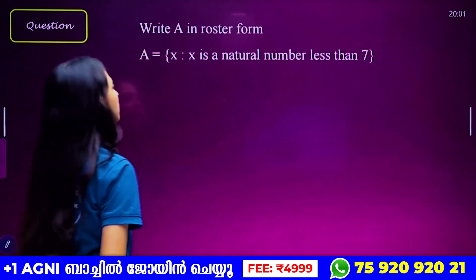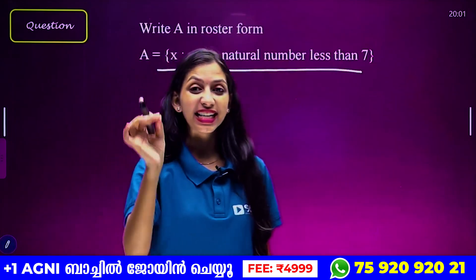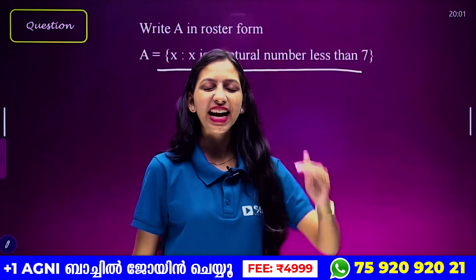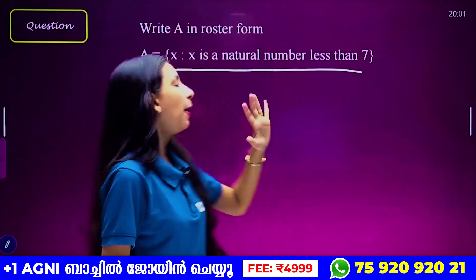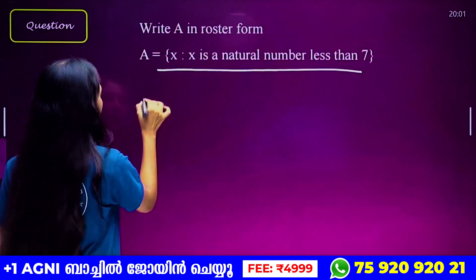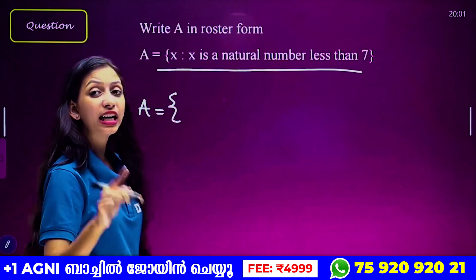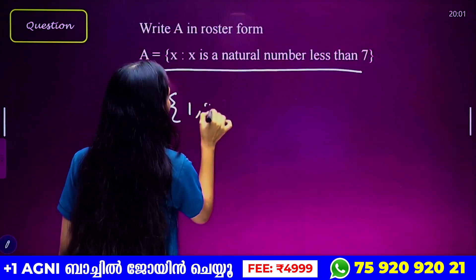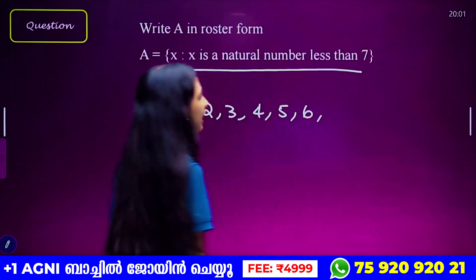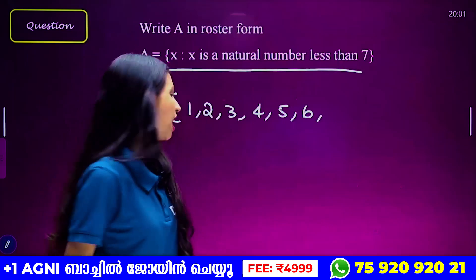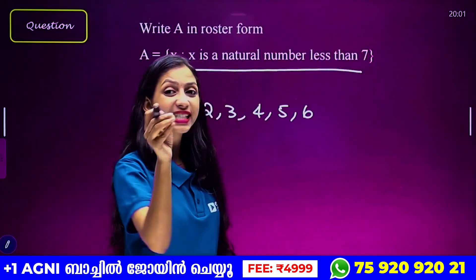What is Roster Form? This is a natural number, 7. We can write it in the case of M. What does it mean? What is the set? The natural number is 1. We have 1, 2, 3, 4, 5, 6 — we have less than 7.